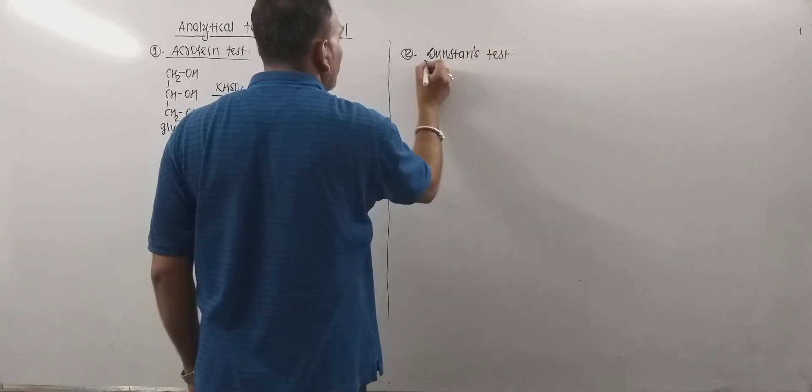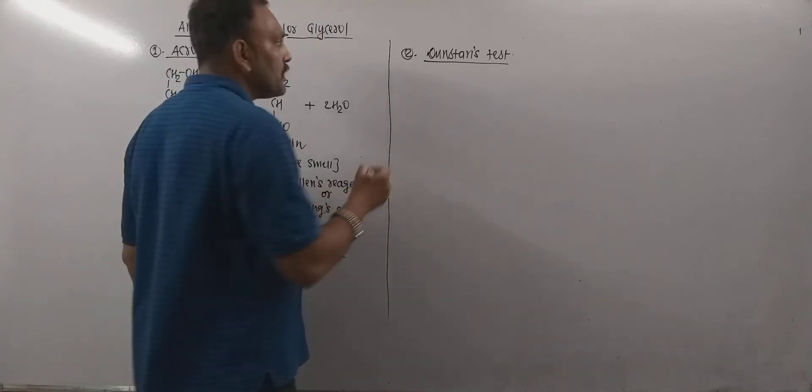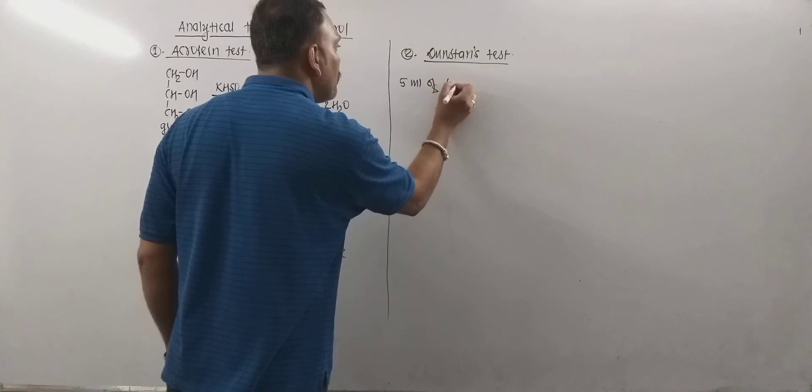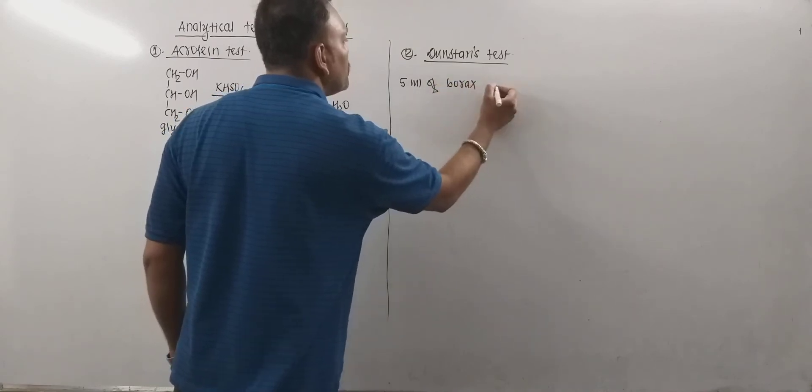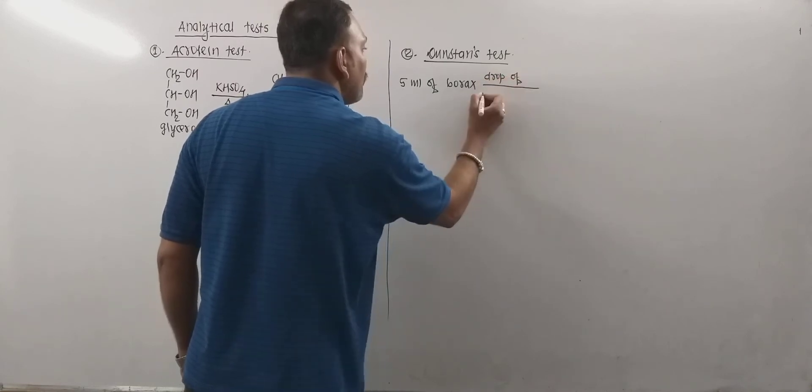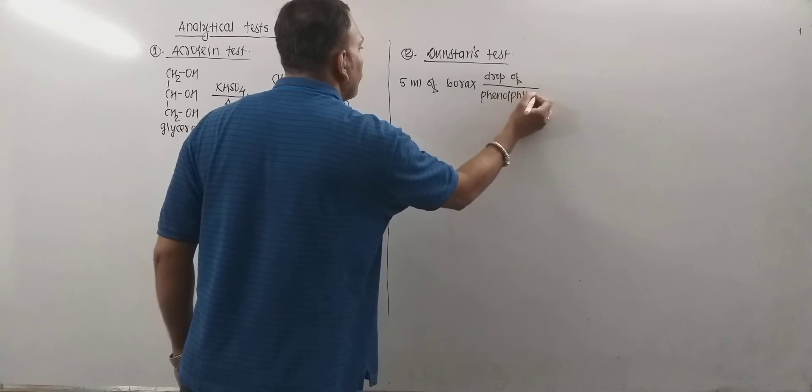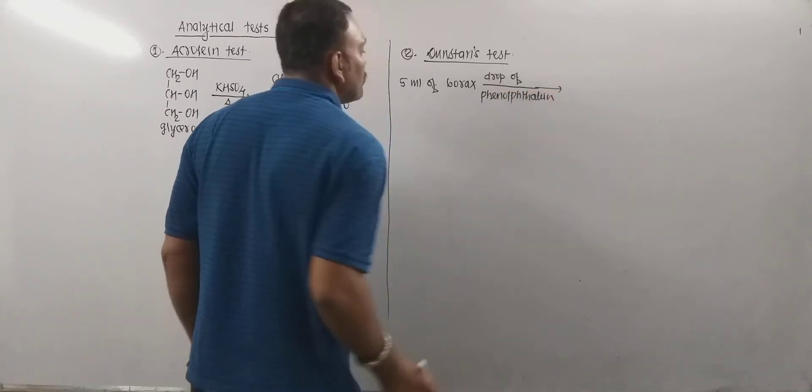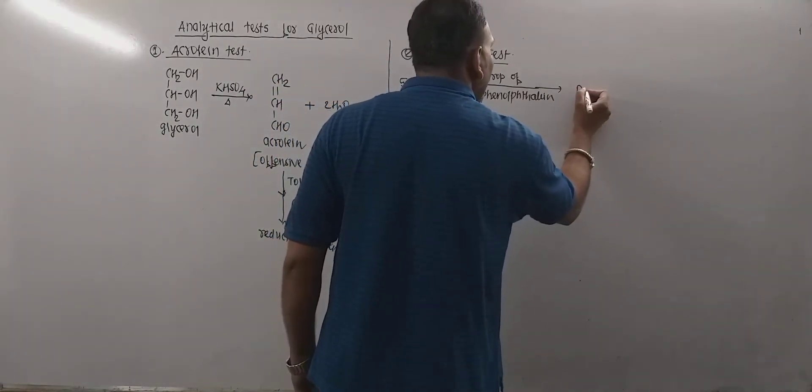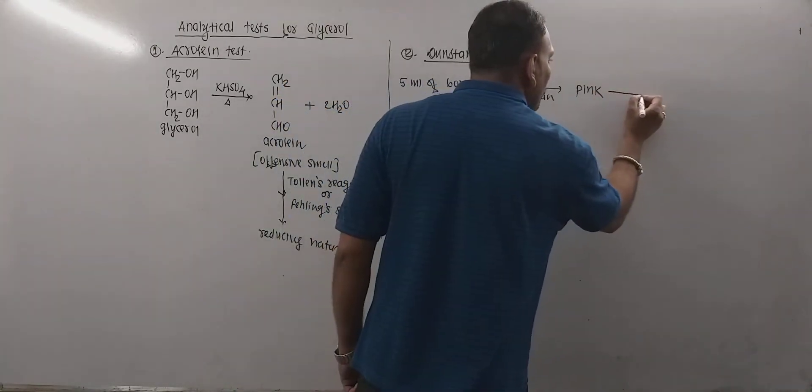This is also an important test. So in Dunstan's test, what we need to do: take 5 ml of borax solution and to this add a drop of phenolphthalein indicator. So on adding phenolphthalein to it, the color of solution becomes pink. Now if to this solution glycerol is added, then it decolorizes the pink color of the solution.